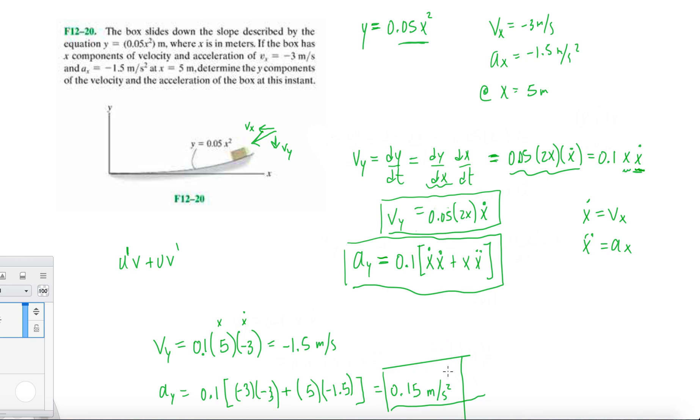So yeah, we have vy and ay, and we found the y components of velocity and acceleration by applying the chain rule to the given equation of y equals 0.05 x squared. So again, review the chain rule in appendix C, go over the examples that they have there, that way you really understand how to apply it moving forward.